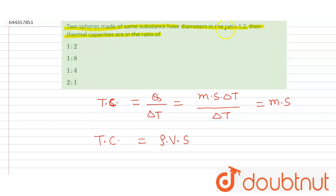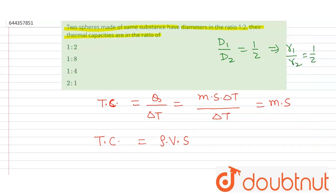So d₁ divided by d₂ equals 1 by 2, and the ratio of the radius will be r₁ divided by r₂ will be same, 1 by 2. Now for the first substance,